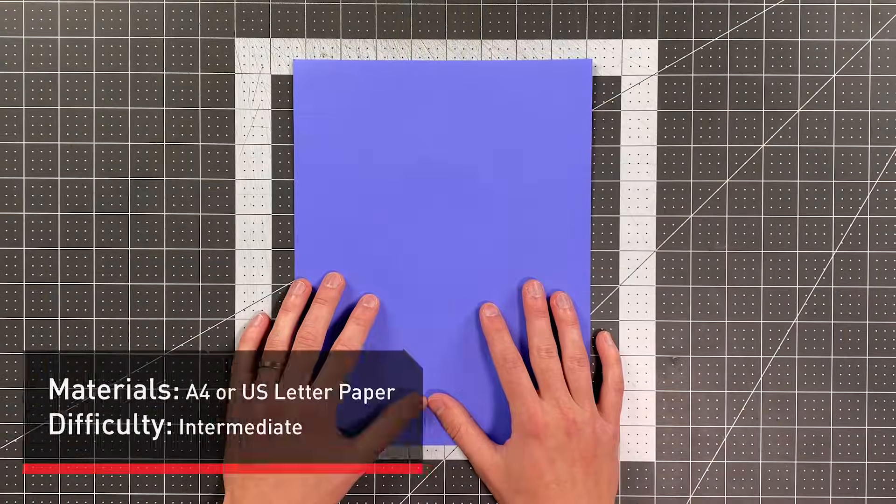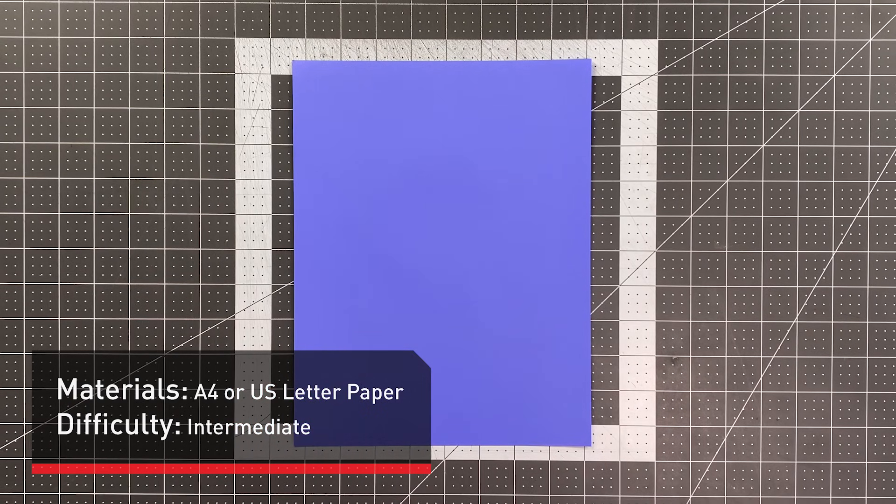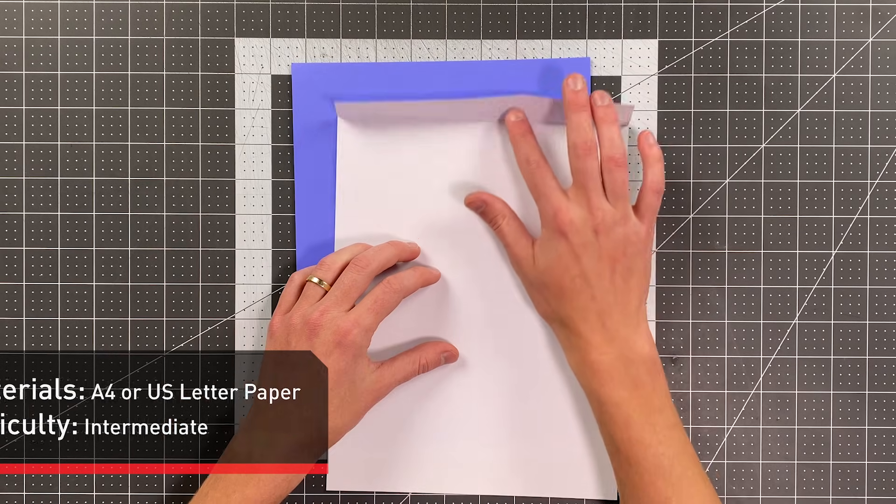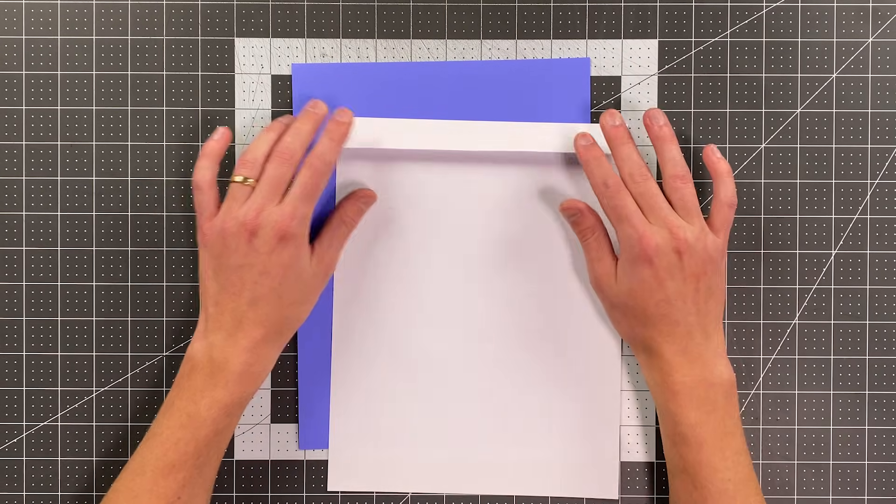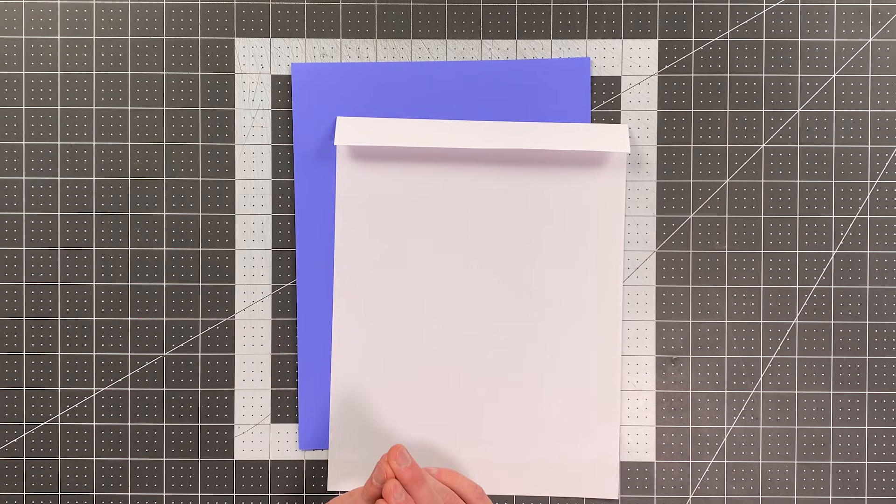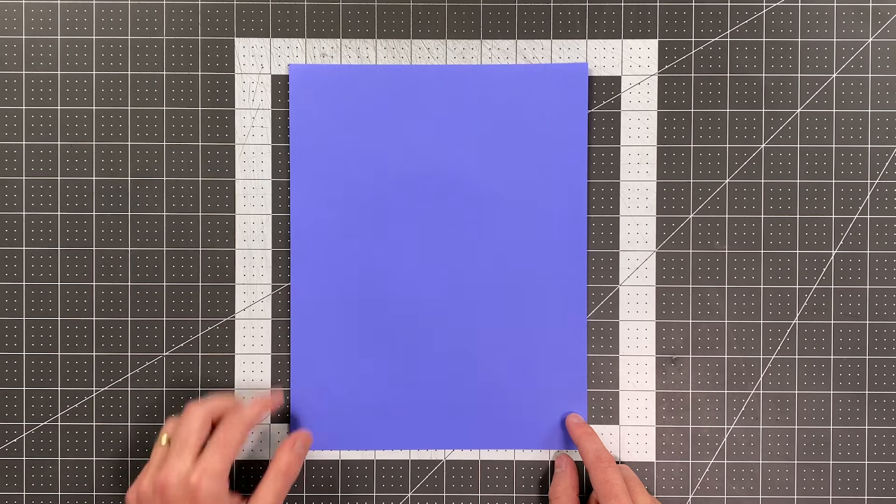All you'll need in order to fold Rocket is a sheet of eight and a half by eleven or A4 paper. If you are using A4 paper, you're going to want to begin just by folding about the top two and a half centimeters down. Aside from that step, the two are identical, so you can follow along now just by folding the right edge to the left edge.